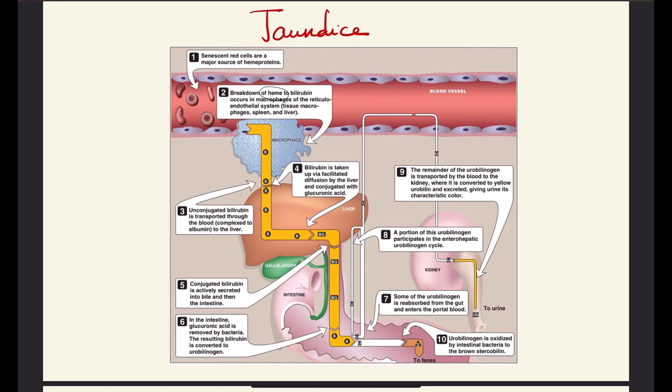Urobilinogen can be taken up into the blood, and once it is taken up into the blood, it travels to the kidneys. In the kidneys it is converted into urobilin, and then it gives the urine its characteristic color. Or it can stay in the bowel, where it is oxidized by the bacteria there to stercobilin, which gives the stool its color.